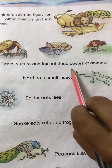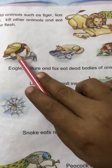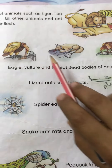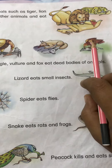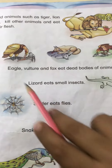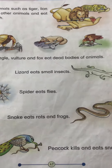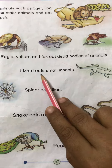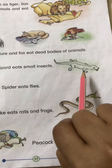Eagle, vulture, and fox eat dead bodies of animals. Lizards eat small insects.